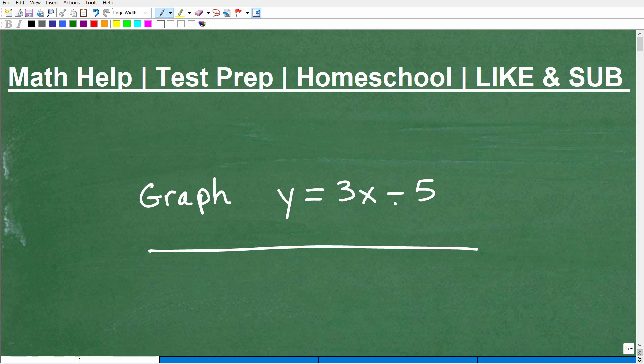Y equals 3x minus 5. This is an example of something called a linear equation. It's an actual equation, as you can see, but the graph of it is a line. So you absolutely need to know how to graph lines in algebra.